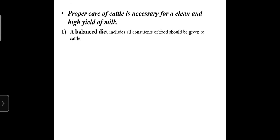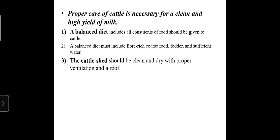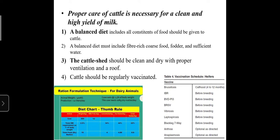The proper care includes: first, a balanced diet including all food constituents — fiber-rich coarse food, fodder, and sufficient water. The cattle shed should be clean and dry with proper ventilation. The cattle should also be regularly vaccinated.